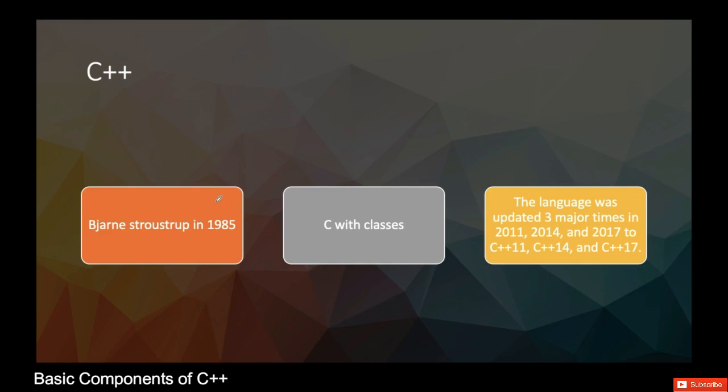It's Bjarne Stroustrup in 1985, and it is the successor of the C programming language. C++ is also called C with classes, and this language was majorly updated three times and is still being used in programming.